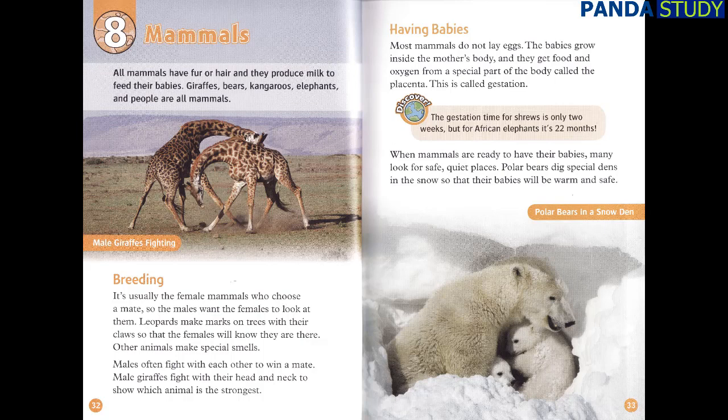Having babies. Most mammals do not lay eggs. The babies grow inside the mother's body and they get food and oxygen from a special part of the body called the placenta. This is called gestation.